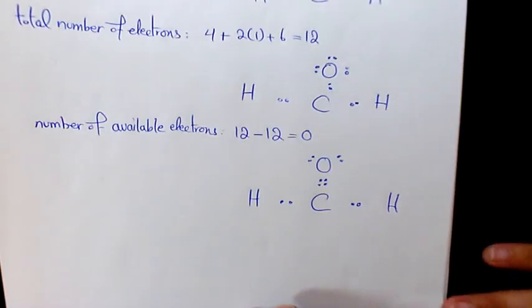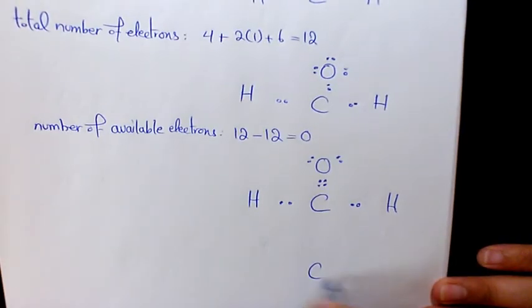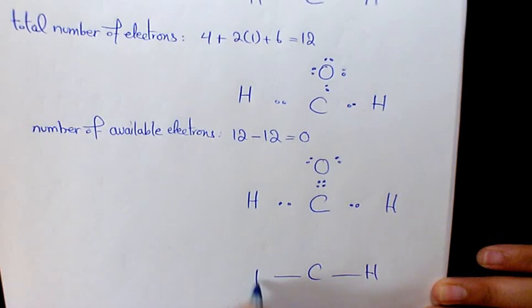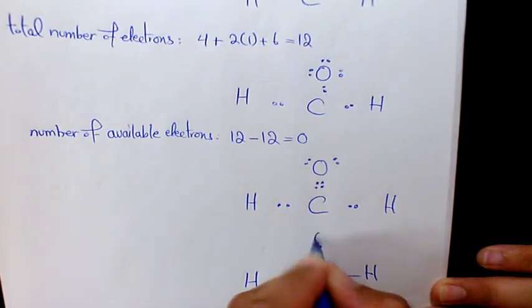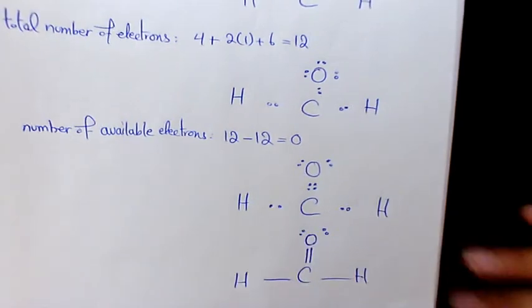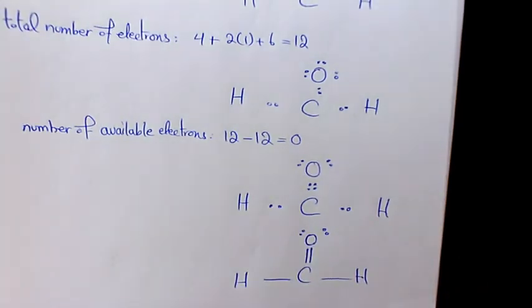And at the end, we need to replace shared electrons with dash. So it's going to be C, H, H, double bond, oxygen, 2 lone pairs in here. So that's going to be the Lewis structure of methanal or formaldehyde.